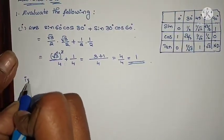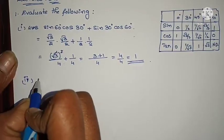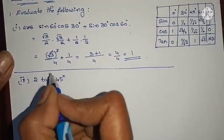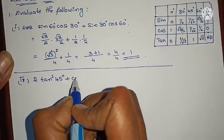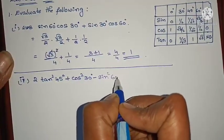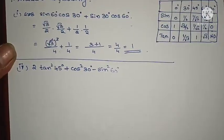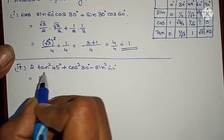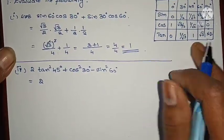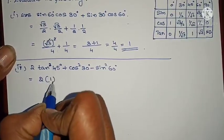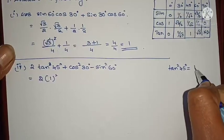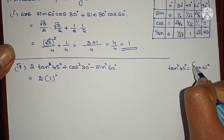Let us see the second one: 2 into tan² 45 degrees plus cos² 30 degrees minus sin² 60 degrees. Now let us solve this. Tan² 45 degrees is nothing but tan 45 degrees whole square — both are the same. Tan 45 value is 1, so 1 whole square.